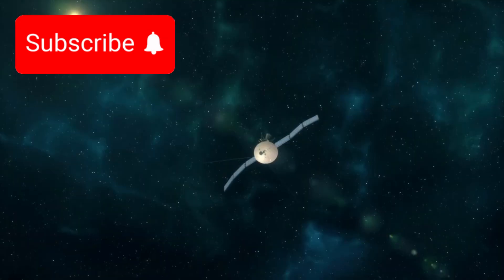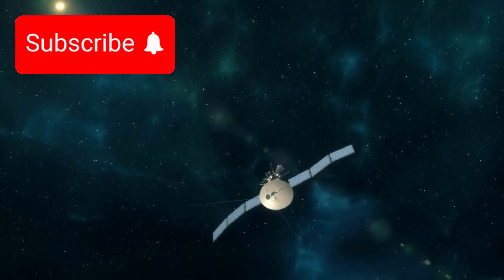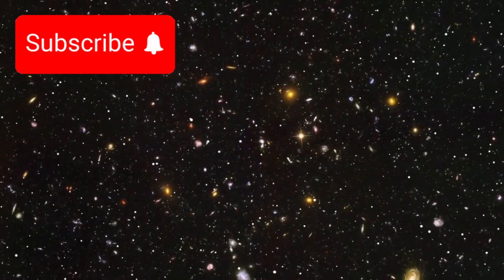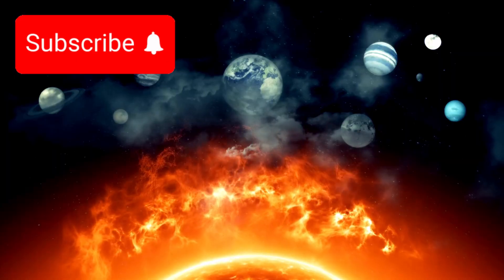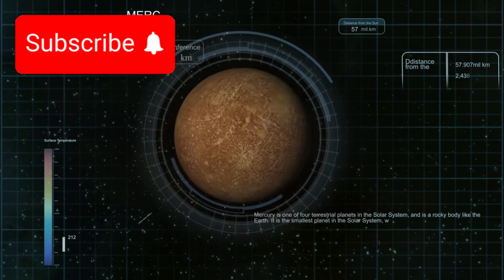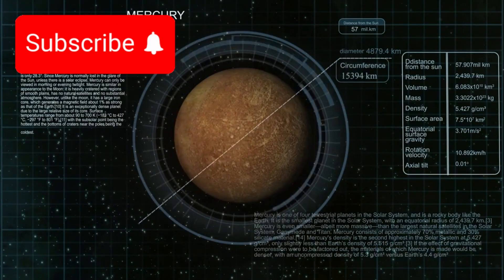And it grew stronger the deeper Voyager pushed into the unknown. It was clear now, the edge of our solar system wasn't a border, it was alive, it was reactive, maybe even aware of the object crossing into it.